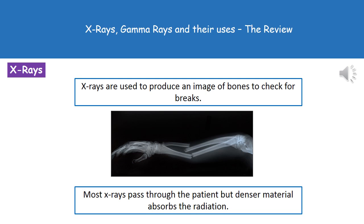The way that x-rays actually work is that most of them will pass through the patient, but any denser material such as bone will absorb the radiation and therefore show up on the film.